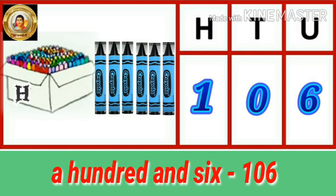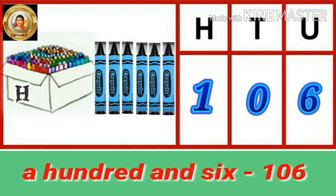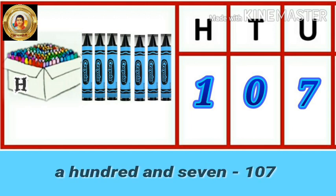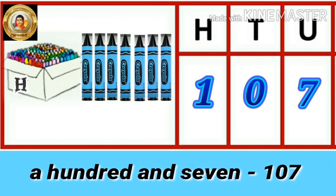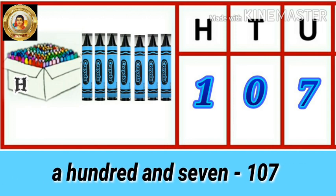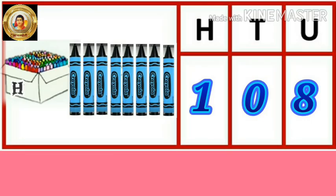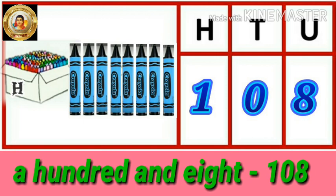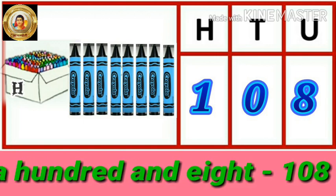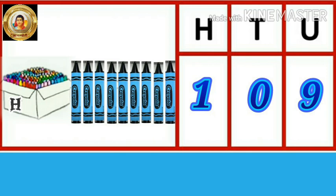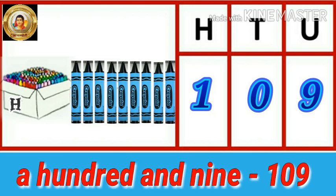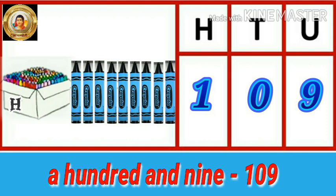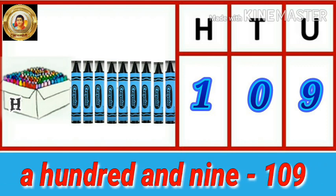There are six crayons in the unit place. This number is a hundred and seven. A hundred and seven. Read this number as a hundred and eight. Next, just a hundred and nine — that is one zero nine. Repeat it: a hundred and nine.